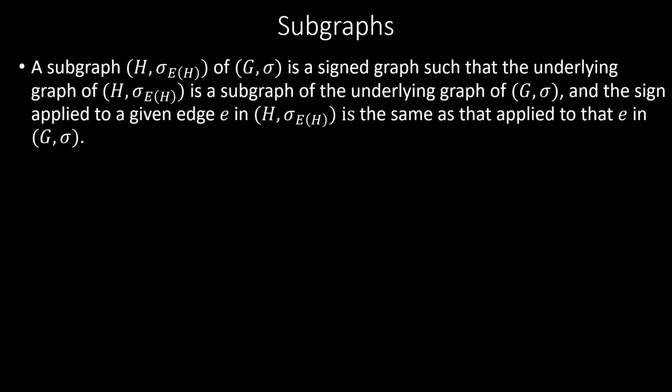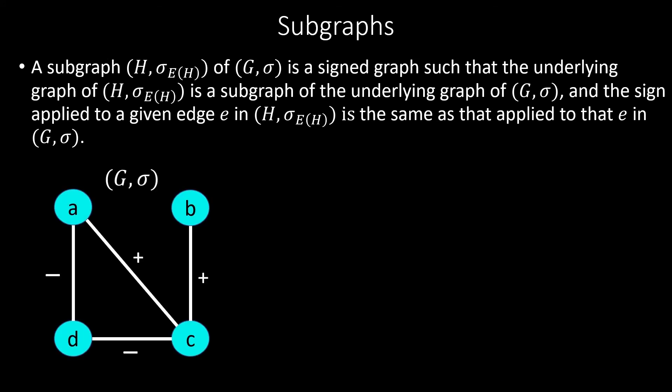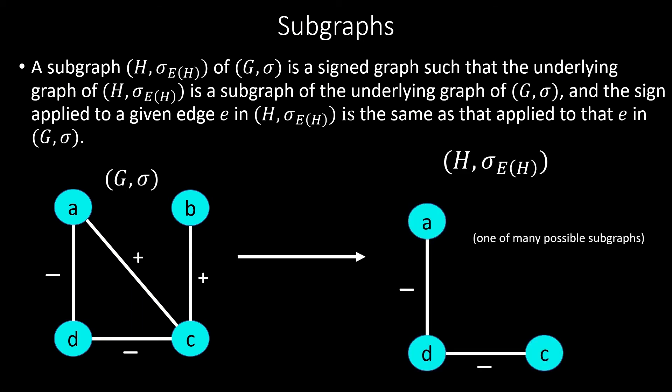Just like we have subgraphs of unsigned graphs, we can also have subgraphs of signed graphs. A subgraph of a signed graph G-sigma is another signed graph H-sigma-sub-E-of-H, whose underlying graph H is a subgraph in the usual sense of the underlying graph G, and where the signs on any edge in H are the same as on that edge in the original signed graph. The signature for H is sigma restricted to the edge set E of H. Note that our underlying subgraphs can be edge induced or vertex induced.